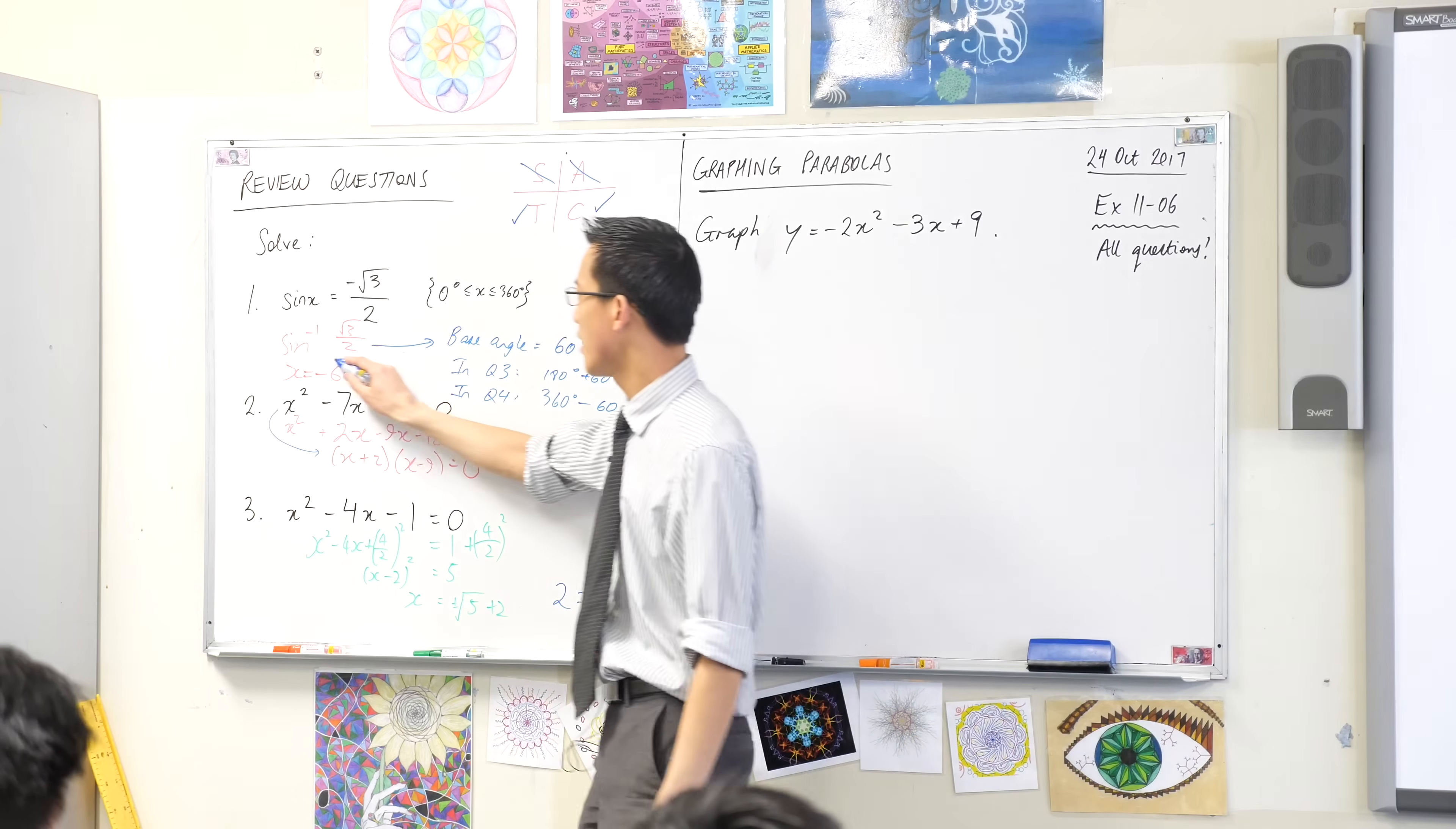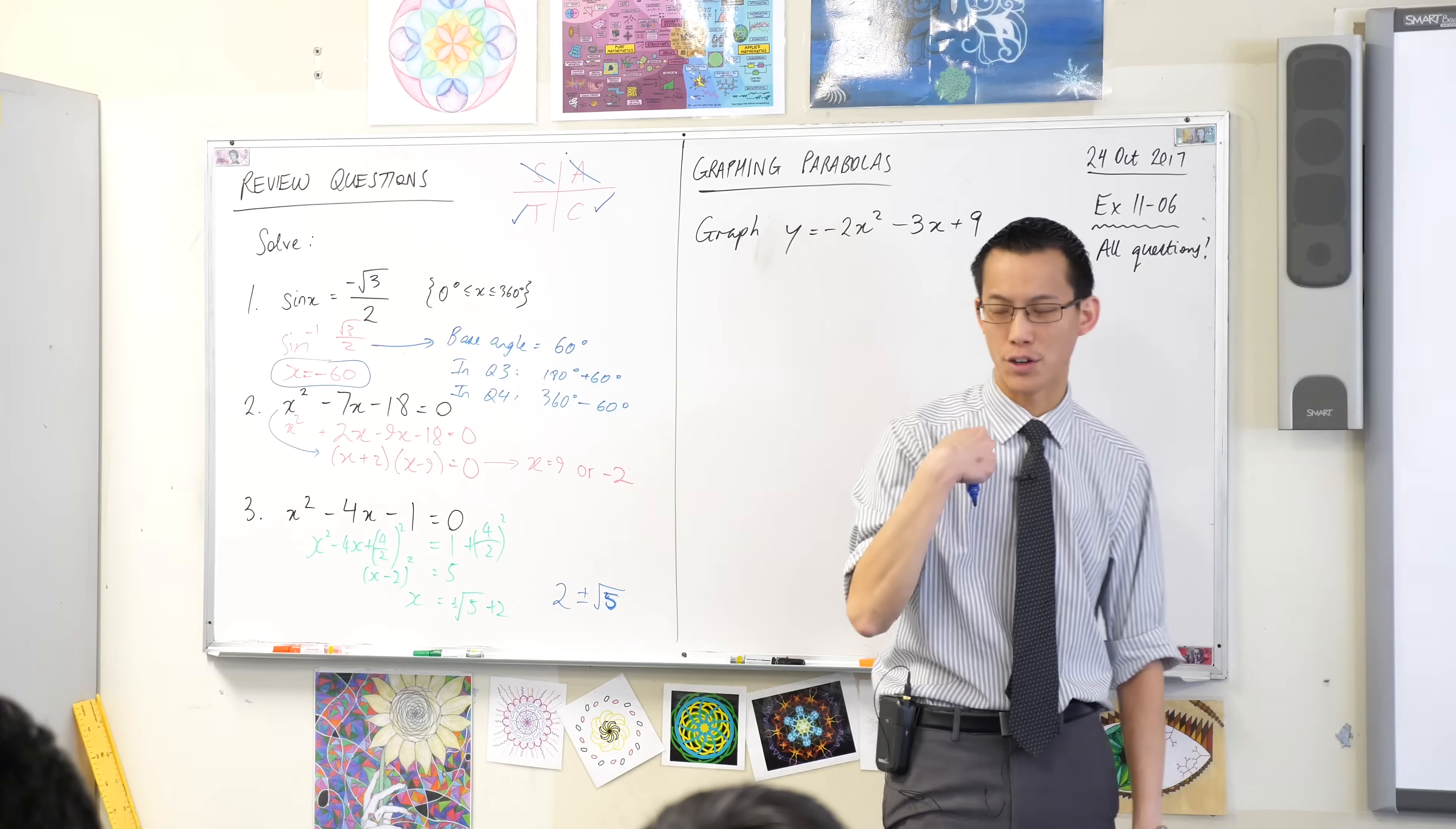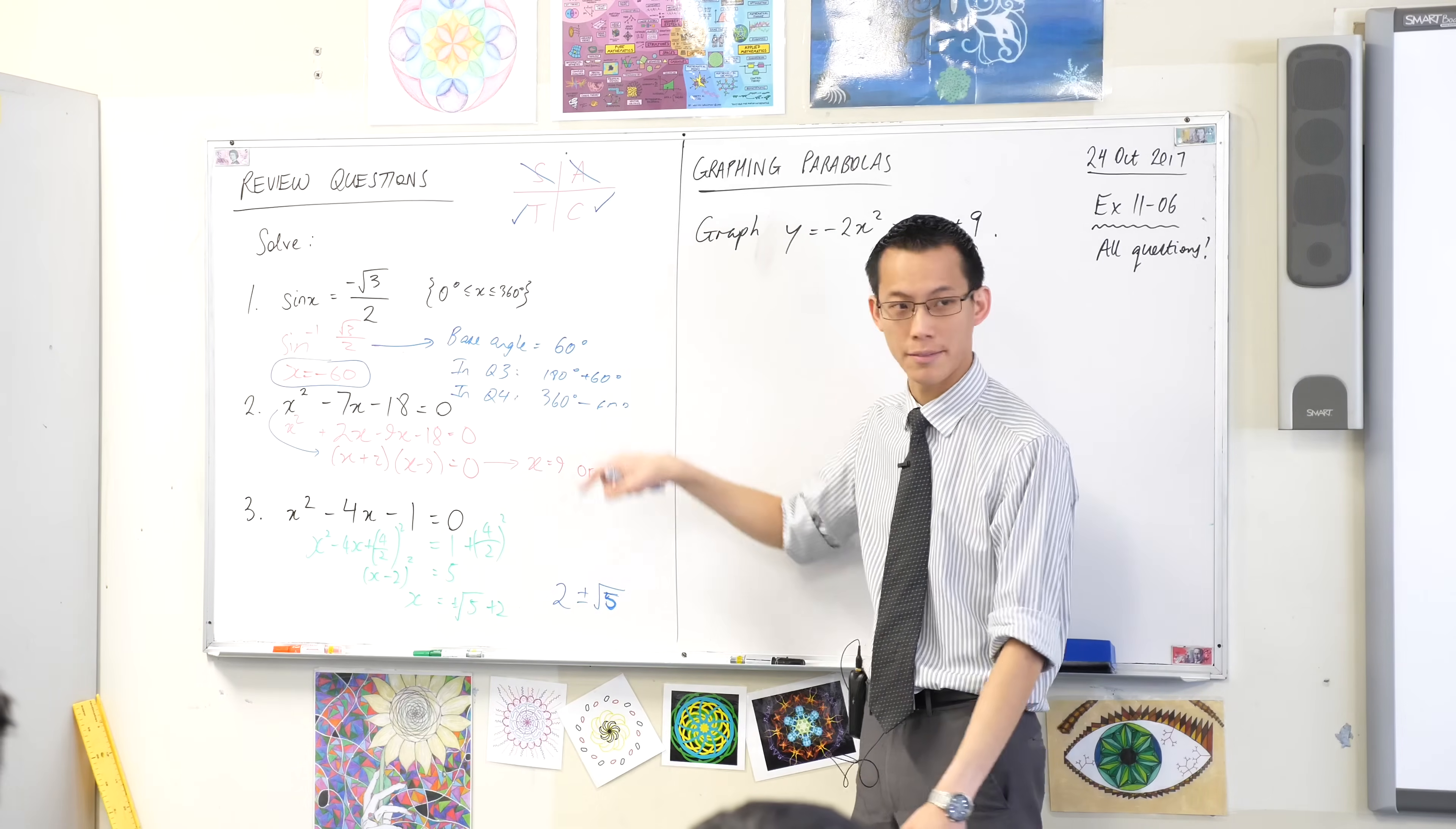Now, by the way, this answer here, negative 60, is not wrong. It's just not in the domain I'm interested in, right? Which is 0 to 360, which admittedly I forgot to write first time and add it afterwards, okay? Negative 60 is this negative 60 right there. So, it's part of the right answer. It's just not the whole thing, okay?